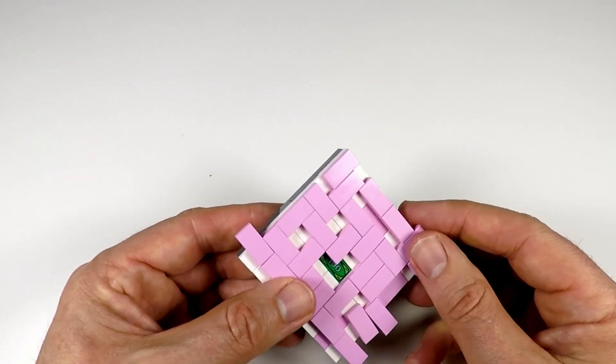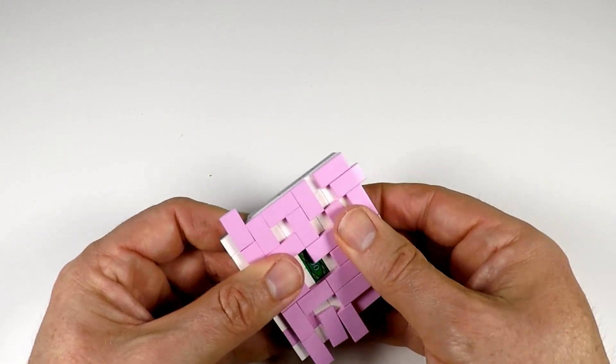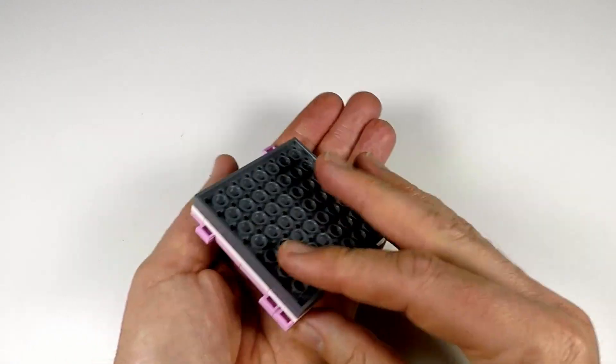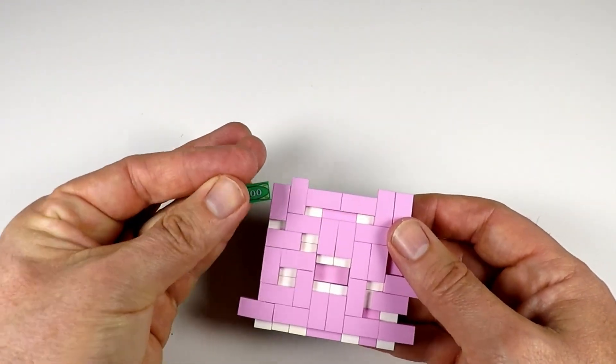We need to slide this one out of the way. The way we're going to do that is slide this one up, this one across, this one back, and there is the prize. So that is how you solve this Lego sliding puzzle.